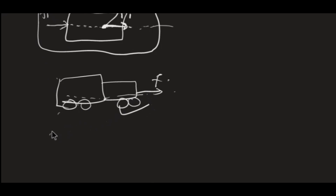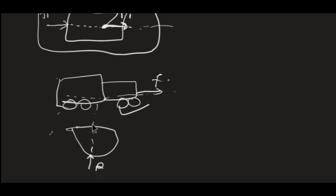Another example: if you have a ball with a reaction force R somewhere, this is the line of action of the reaction. You can bring the reaction up to another point along the same line, redraw R — since it is in the same direction and has the same magnitude, nothing changes.